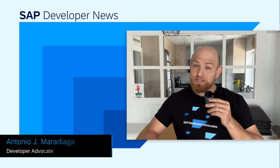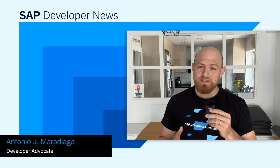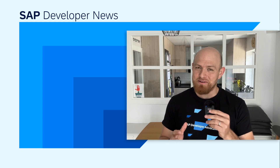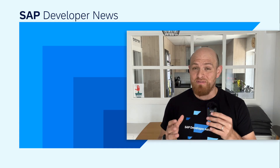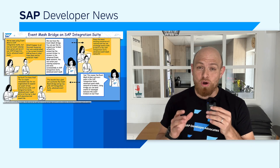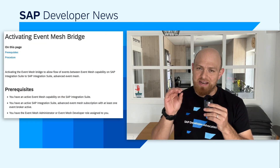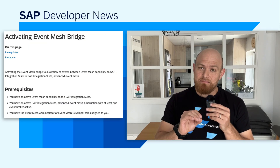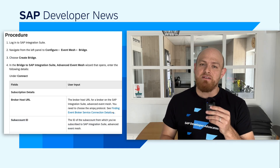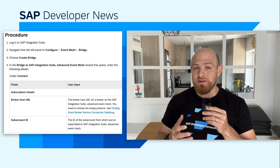If you've embraced event-driven architectures and you're using the event mesh capability in SAP Integration Suite, but you're experiencing a large volume of events and looking to adopt advanced event mesh to scale your event-driven architecture practice — did you know that it is now possible to connect the broker part of the event mesh capability with your instance of advanced event mesh? This is called the event mesh bridge. You just configure the details of an AEM broker in the event mesh bridge, set the topics you're interested in forwarding, and AEM will start receiving all those events.